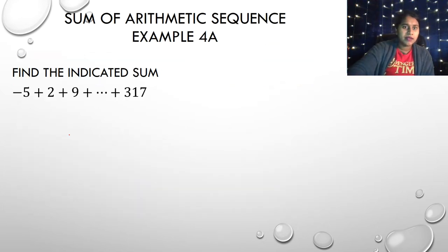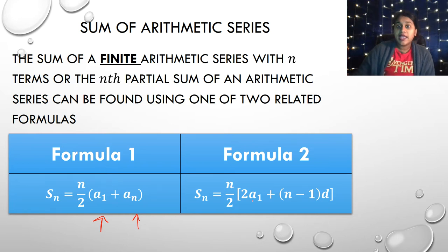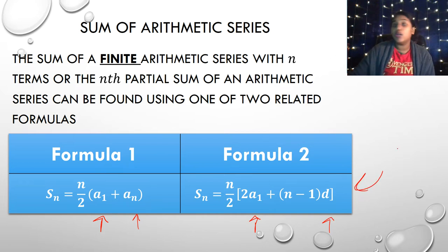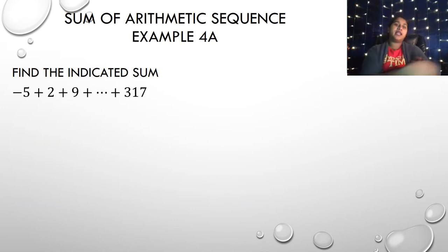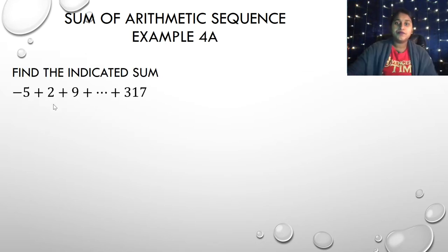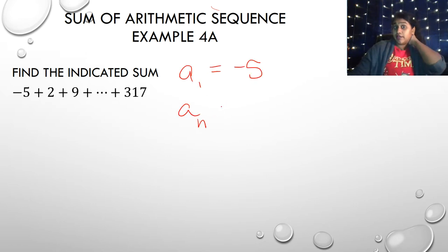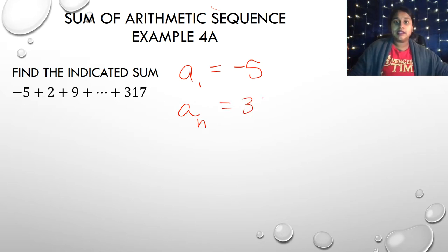We have two sum formulas. Formula one uses the first term A1 and the last term A sub N: S sub N equals N over 2 times (A1 plus A sub N). Formula two uses the first term and the common difference D, and is used when we have no information about the last term. I need to identify which formula applies based on the given information.